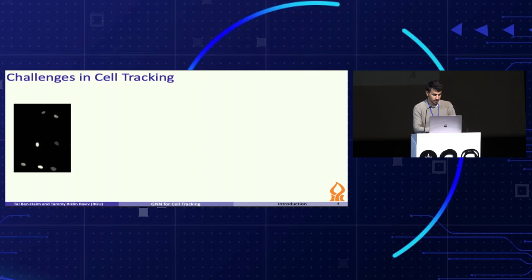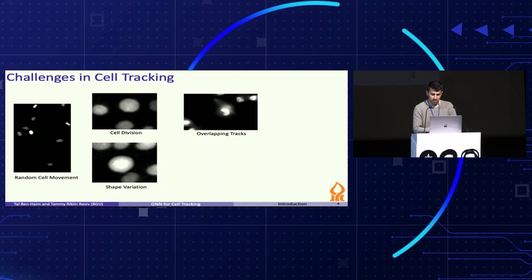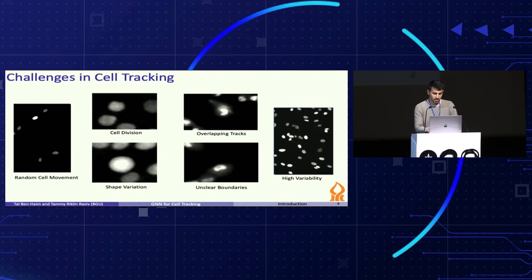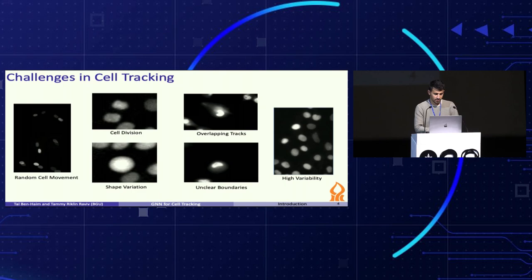The cell tracking problem poses many challenges, such as random cell movement, cell division, shape variation, overlapping tracks, unclear boundaries, and high variability within and between datasets in terms of appearance, morphology, dynamics, and density. In addition, the number of cells in each frame may vary from just a few to hundreds.